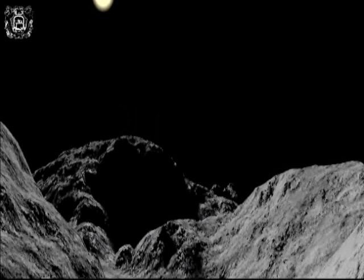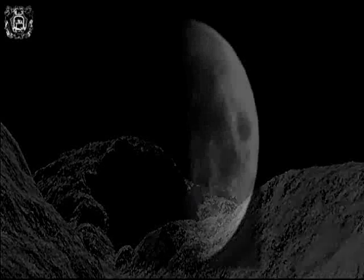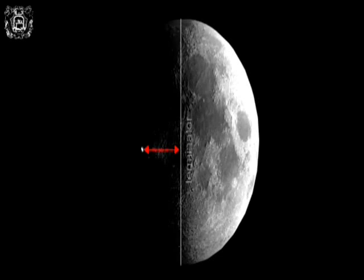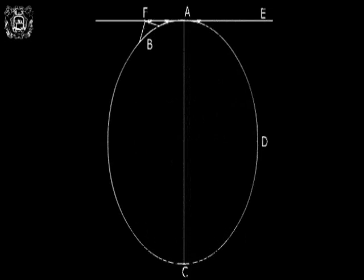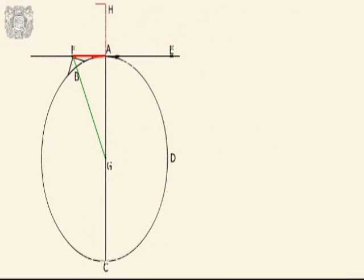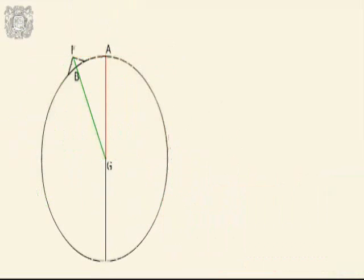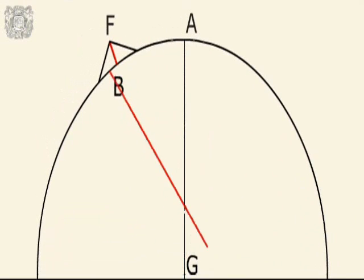With a simple but ingenious method, Galileo was able to calculate the height of the mountains on the Moon. He estimated the distance of a mountain from the Terminator as about 1/20th of the apparent diameter of the Moon. Then, dividing by 20 the length of the true lunar diameter — known since antiquity — he obtained the length of segment FA. By applying Pythagoras' theorem to the right triangle GAF, he found the hypotenuse FG, representing the distance of the mountaintop from the centre of the Moon. By subtracting from this the radius of the Moon, he obtained the height of the mountain.